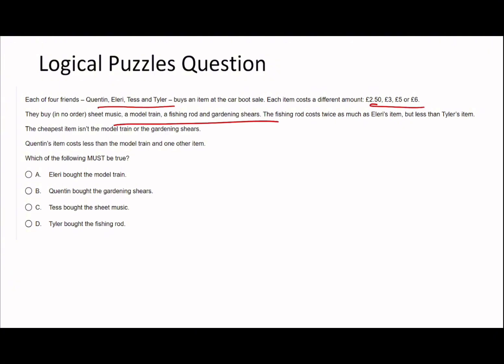This is a classic question - you've got four people, four costs, four different things. The fishing rod, model train, and gardening chairs are mentioned, so I'm going to put the items down the middle: sheet music, model train, fishing rod, and garden chairs.